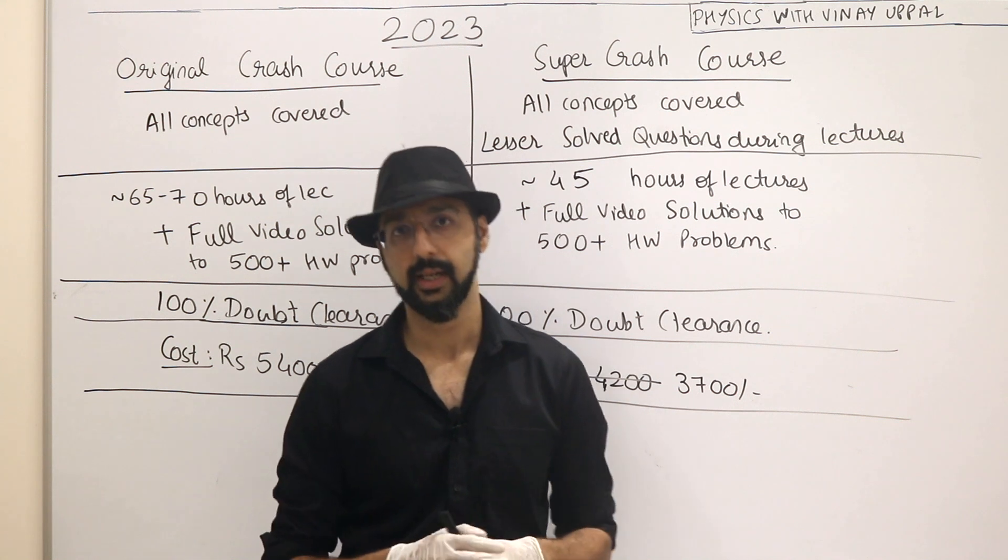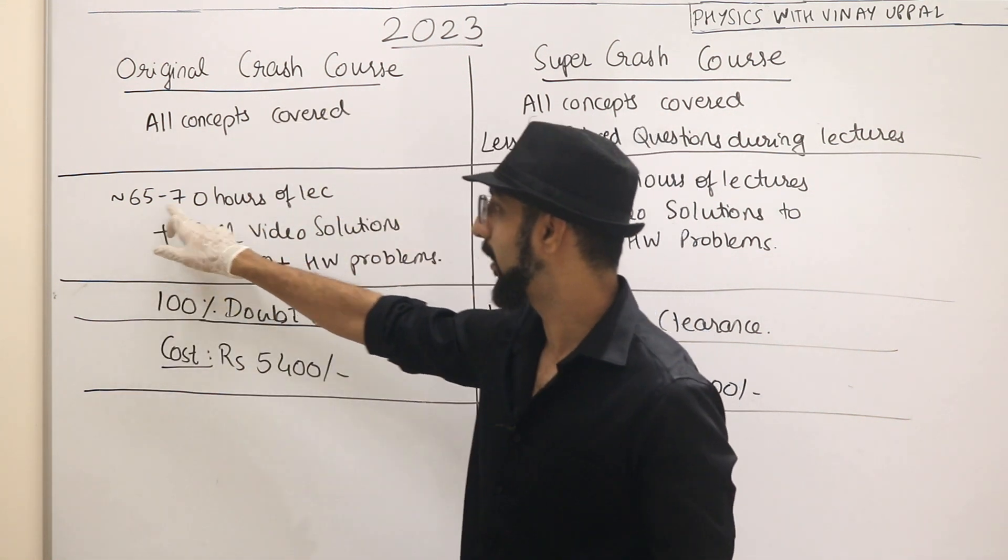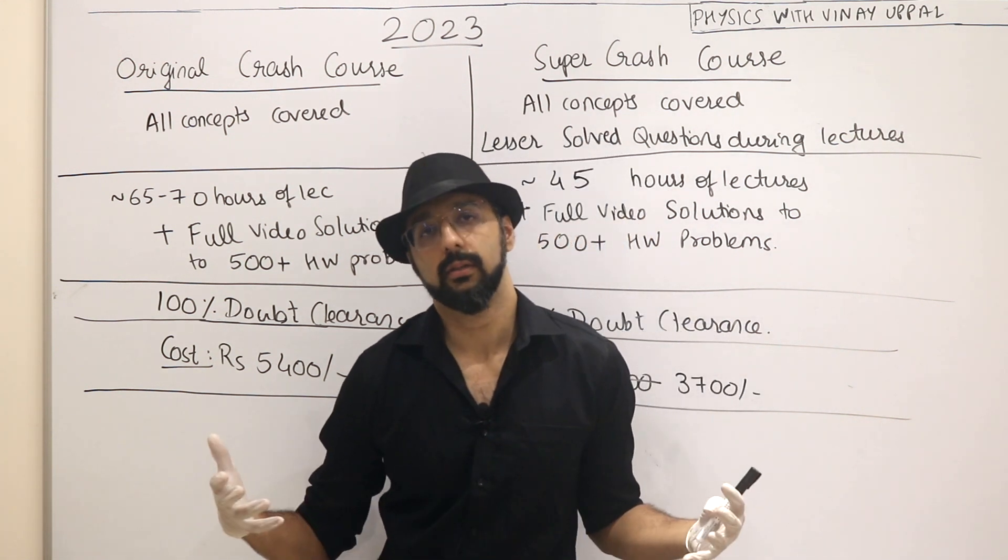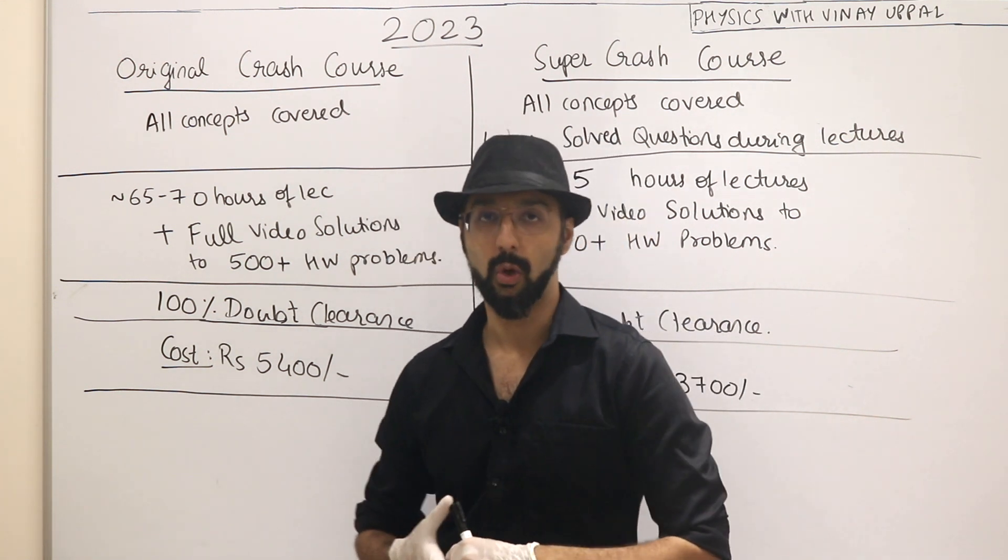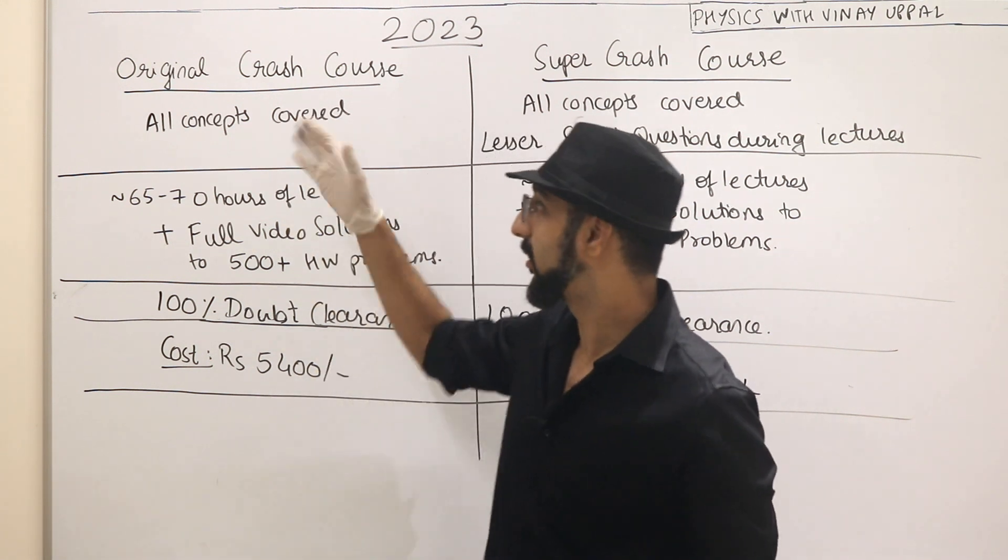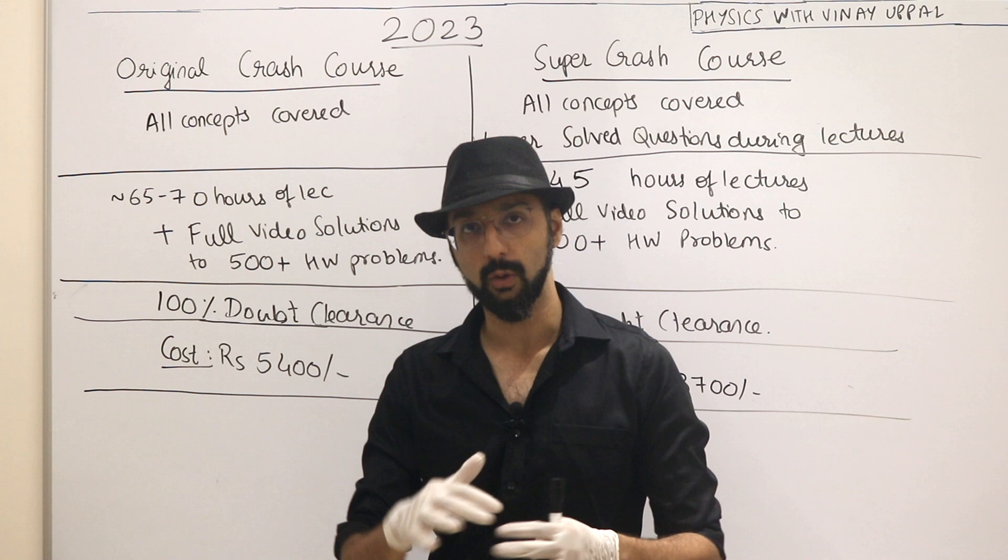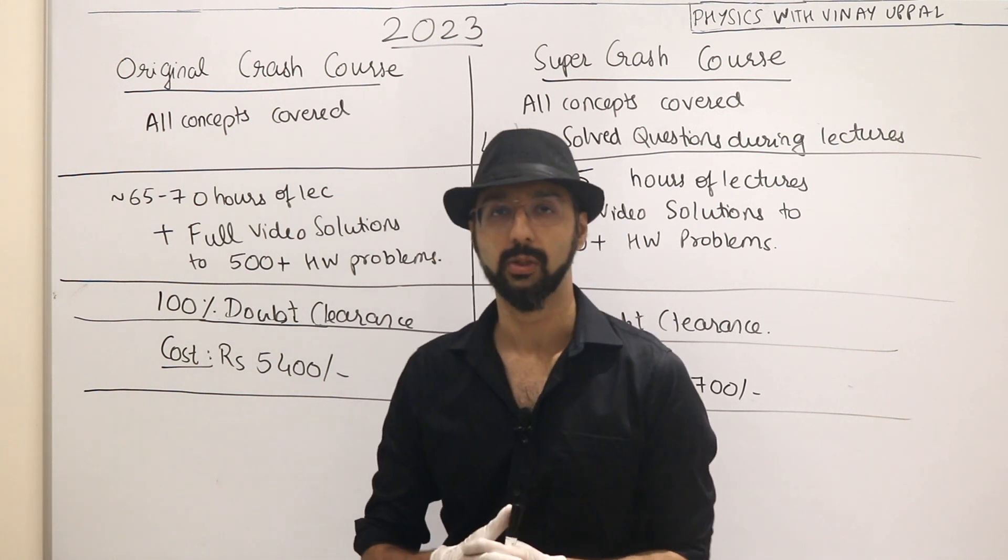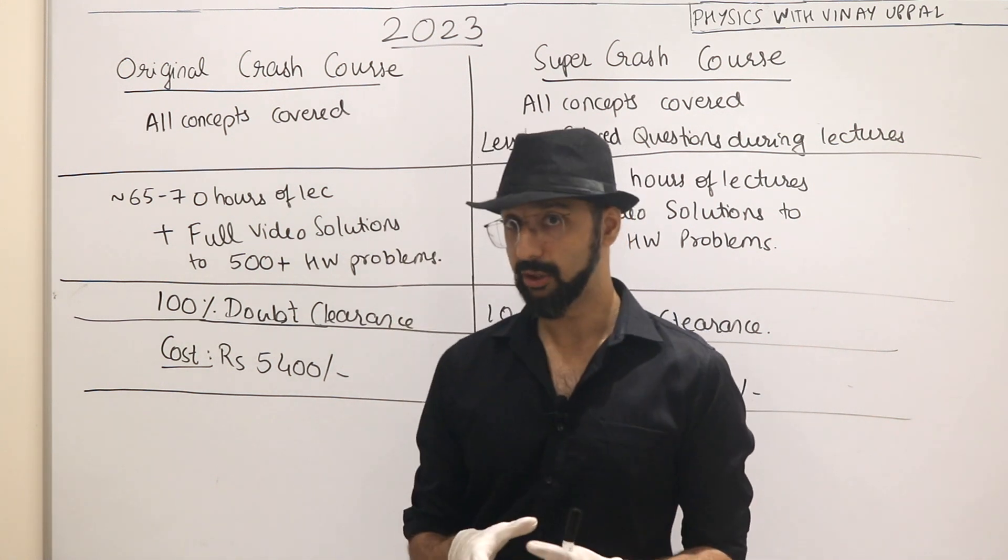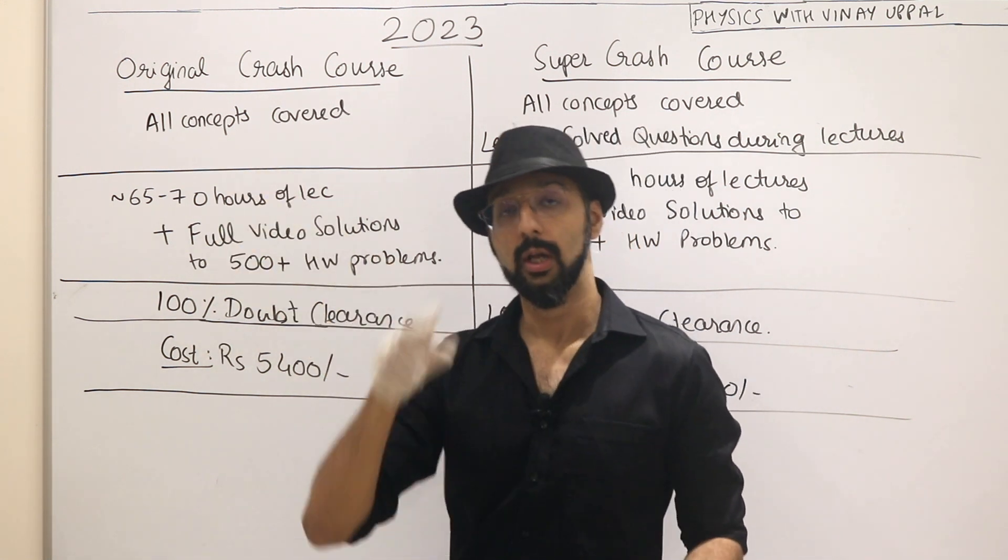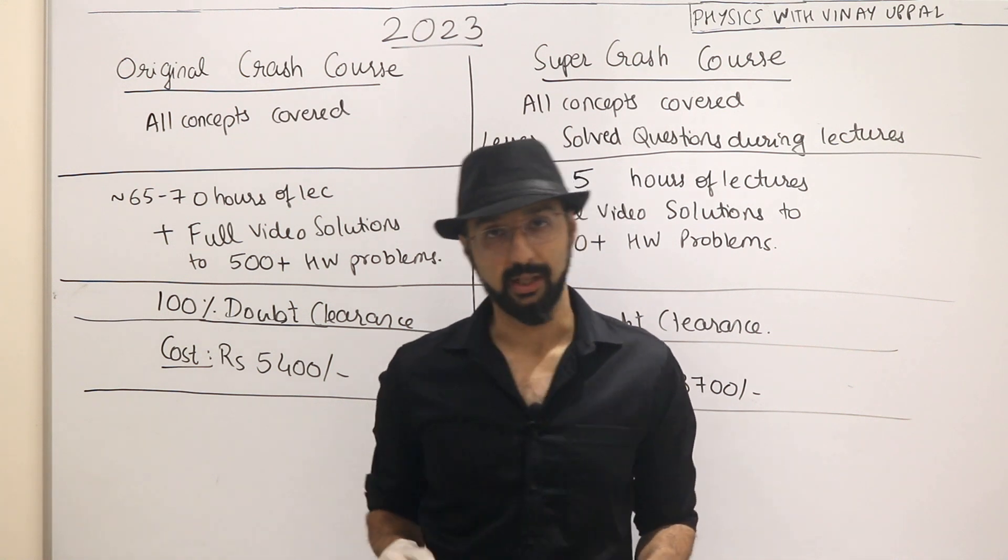And I understand that the original crash course is around 65 to 70 hours of theory lectures. I understand that you may not have that much time to watch. If you do, this is the best. If you have enough time, of course you can watch it at 1.25x, 1.5x speed. If you have that much time for physics, this is the best course you will ever find that will take your performance to JEE Advanced level.